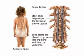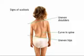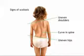Many times the first sign noticed by the parent of a child with scoliosis is ill-fitting clothing, most specifically uneven hemlines. As the curvature becomes more pronounced, more signs and symptoms appear, such as uneven shoulders or shoulder blades, and a protruding scapula with one side of the back higher than the other.